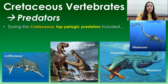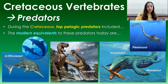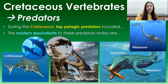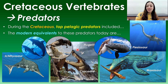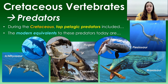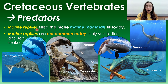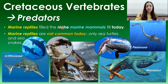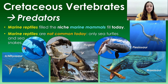Modern equivalents to these Cretaceous predators include dolphins for the ichthyosaur, crocodiles still living today, and for the mosasaur both sharks and whales — mosasaurs likely ambushed prey like great white sharks do, but occupied a size and niche similar to whales. Overall, marine reptiles — ichthyosaurs, plesiosaurs, and mosasaurs — filled the niche that today is filled by marine mammals. After the end-Cretaceous extinction, most marine reptiles went extinct; only sea turtles and sea snakes remain as marine reptiles today.